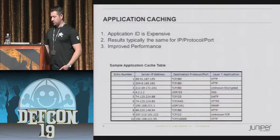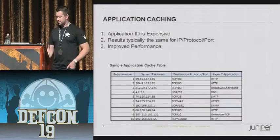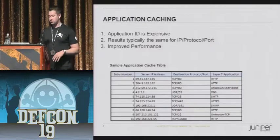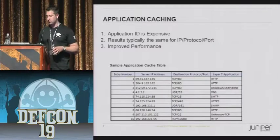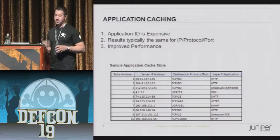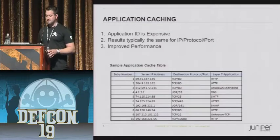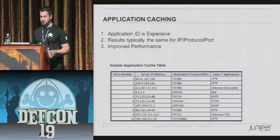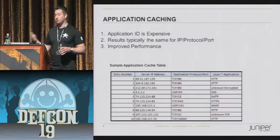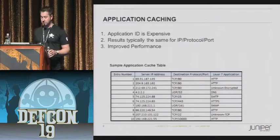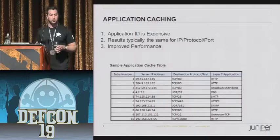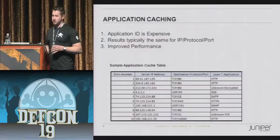One relatively new technique is called application caching. Doing App ID is expensive - a lot more expensive than just traditional layer 3, layer 4 forwarding or stateful firewalling, though not as expensive as IPS. You still have to do a lot of pre-processing and then do the pattern matching. In the case of good applications, if you go to a web server on TCP port 80, it shouldn't be changing applications at any time - it should be HTTP every time. So sometimes application caching is turned on. It's not a bad thing, but it's important to understand the limitations, because a malicious attacker could potentially leverage it.